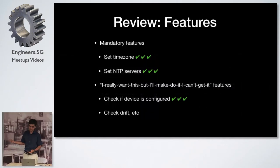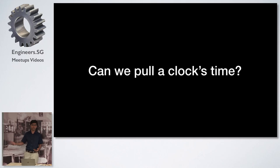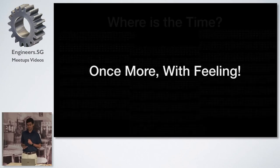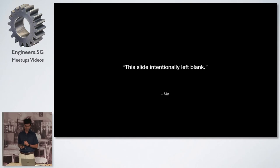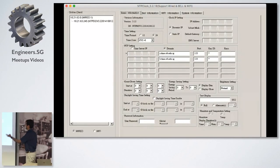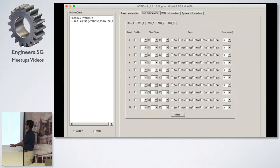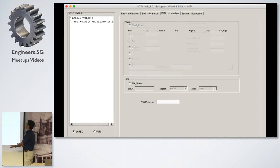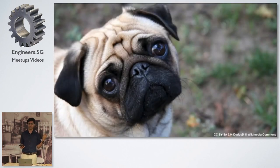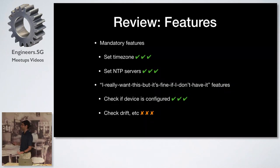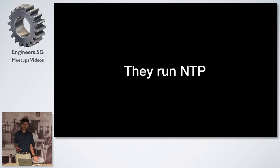Looking back at a review of the features: time zone set — we can do it. NTP server set — we can do it. Check if device is configured — we can do it. What about checking drift? Can we pull a clock's time and check if it's within some acceptable buffer, and if not, tell it to re-sync? Where is the time in this madness? This slide intentionally left blank. What about our old friend the Windows application? Tab one — I don't see any time here. Tab two — no time. Tab three — our clocks don't even have Wi-Fi, what are you doing here? Tab four — I can change the password, but that doesn't help. Even the Windows app can't pull the time. So we can't really check the drift — but it's all right, the clocks run NTP. What could go wrong?